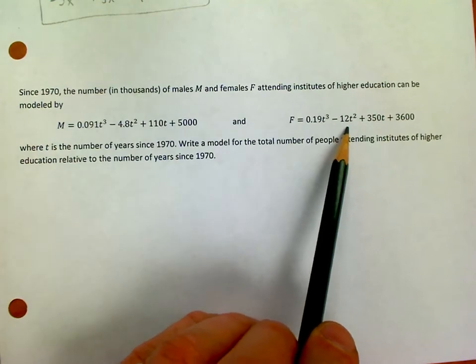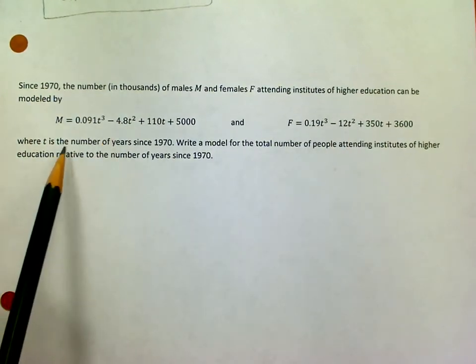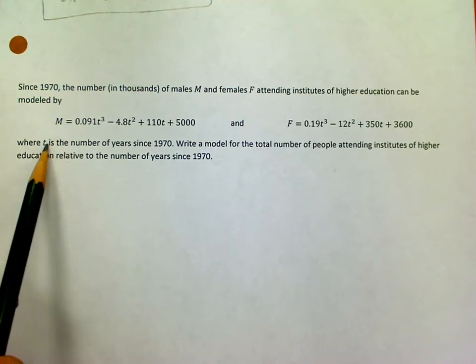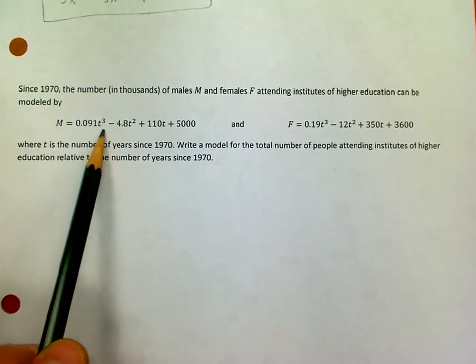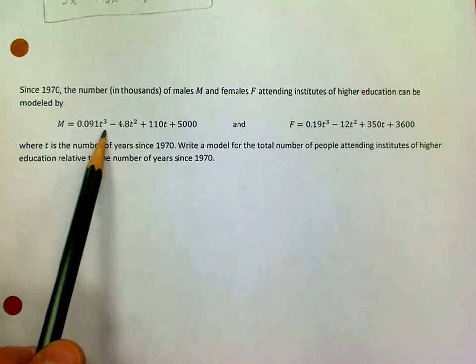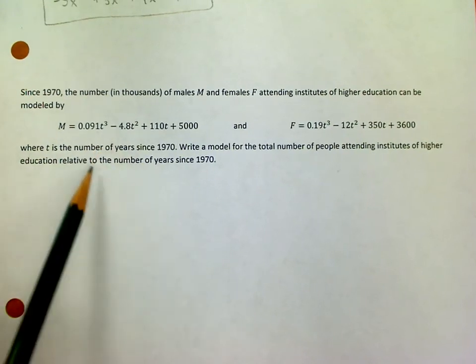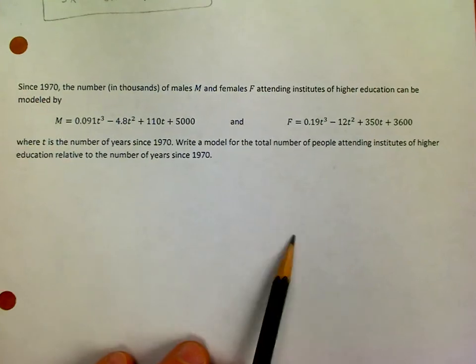t in this case is the number of years since 1970. So if I put a zero in, that means it's zero years since 1970, that would be the year 1970 itself. If I put 10 in, that would be 1980 because I'd be 10 years since 1970. So that's kind of the idea.